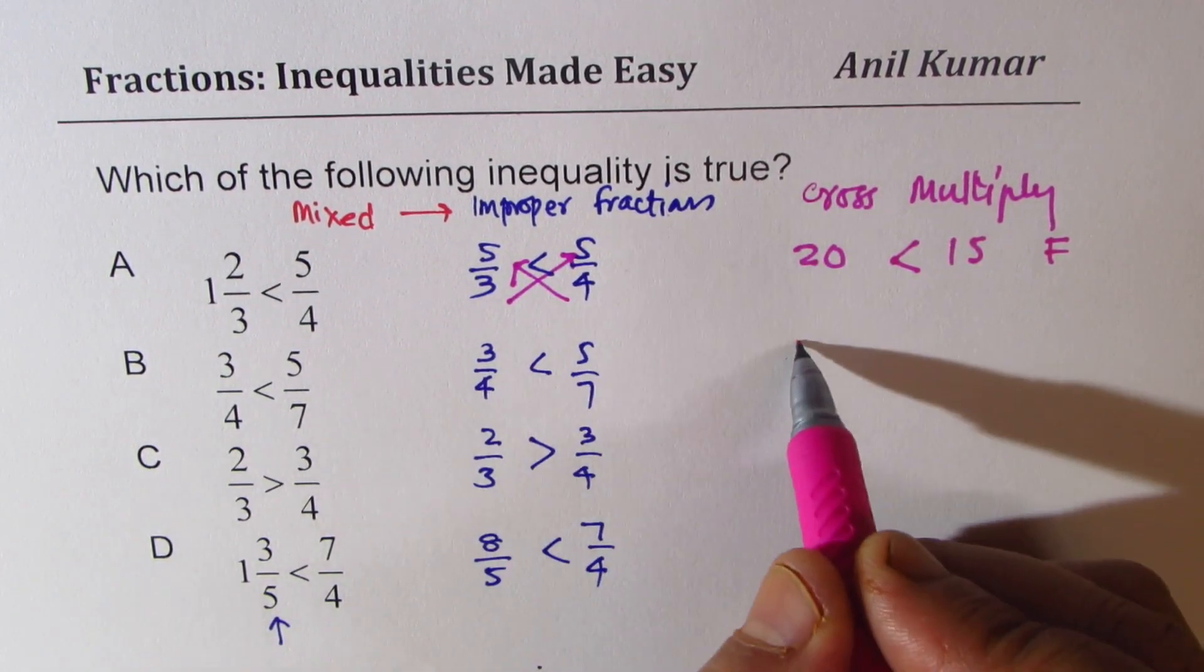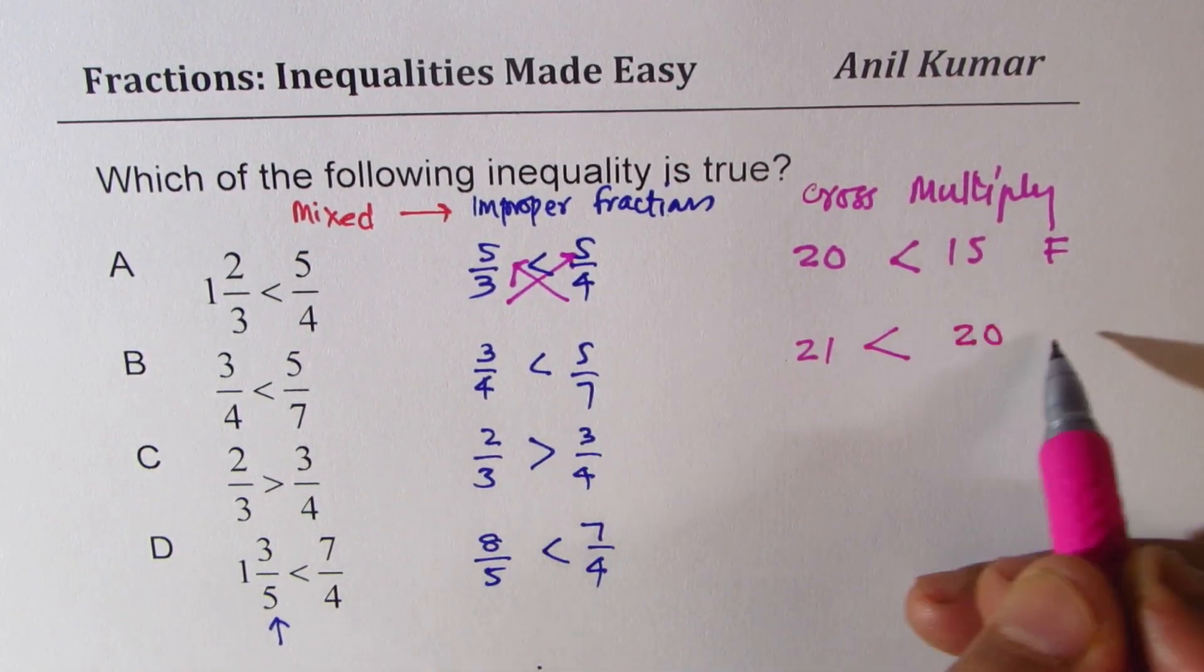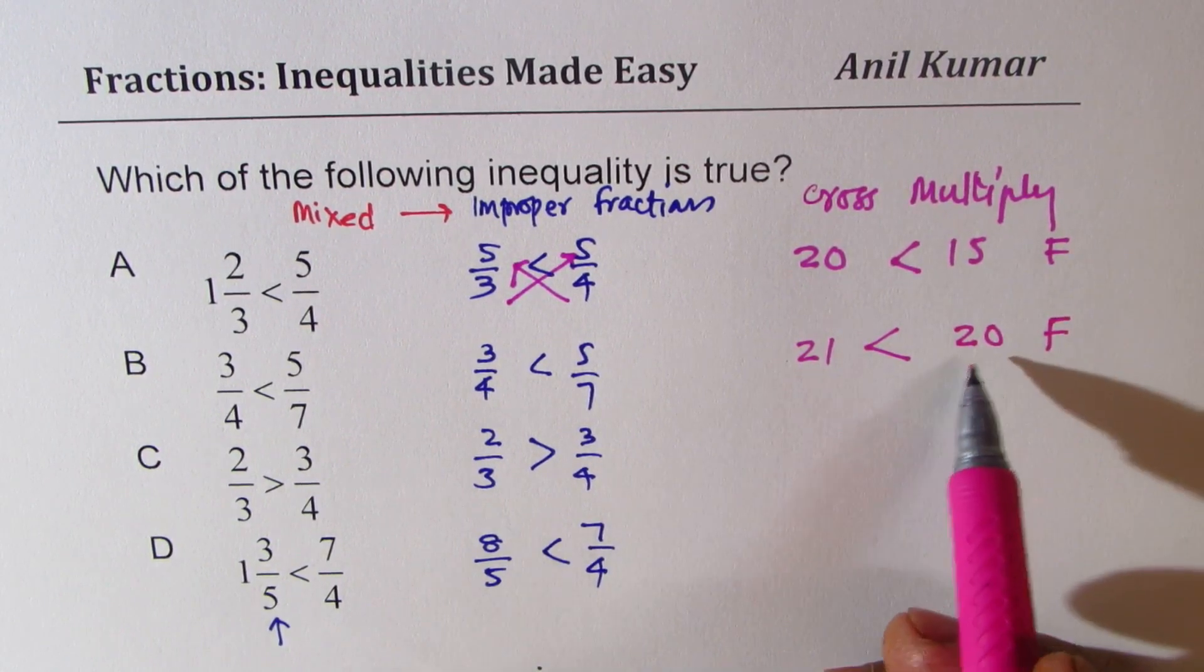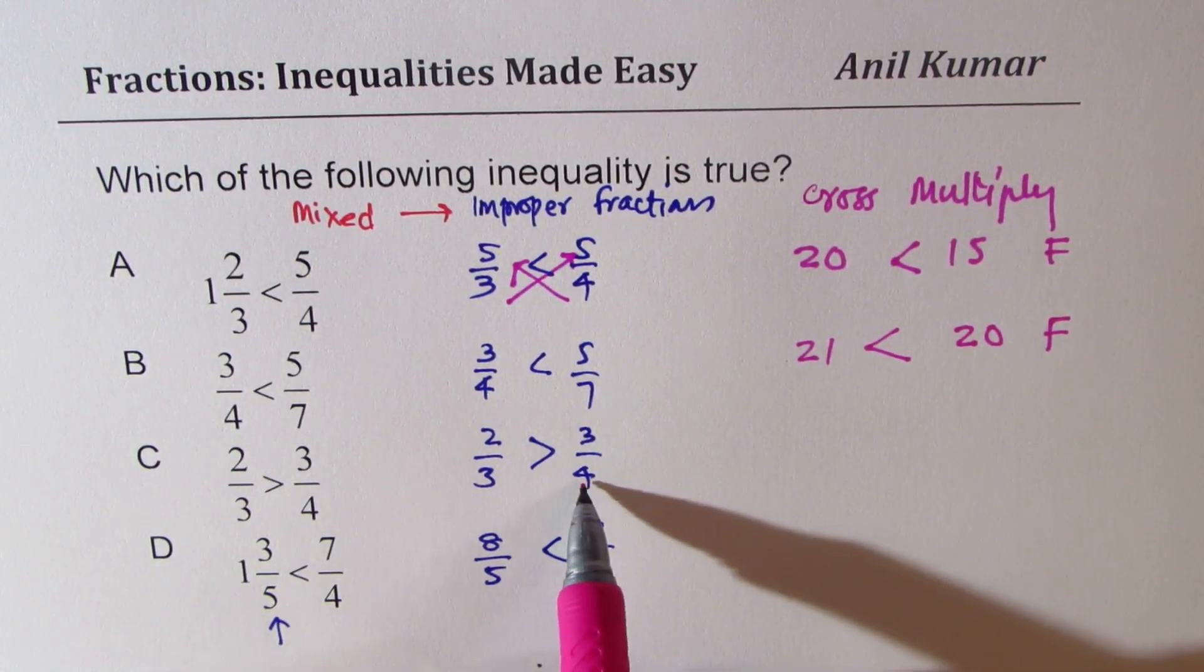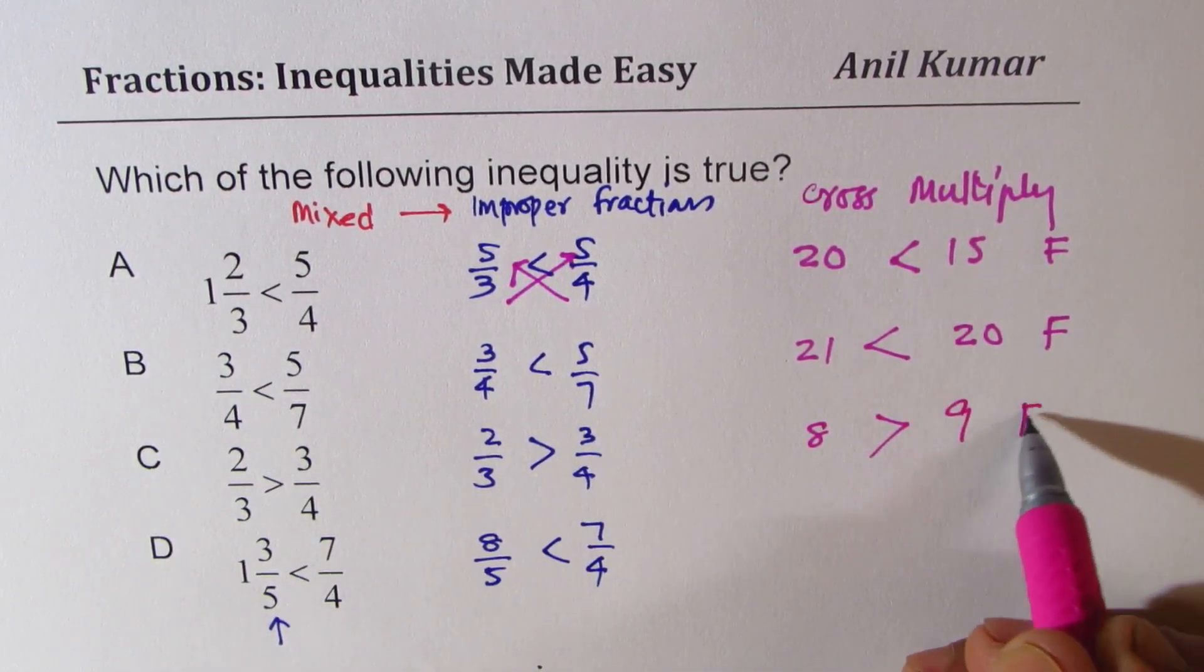So cross multiply. 7 times 3 is 21. 5 times 4 is 20. We know this is also false. 20 is not greater than 21. Here if you multiply, you get 8 is greater than 3 times 3, which is 9. It is false.